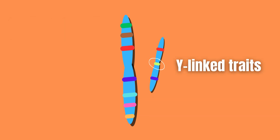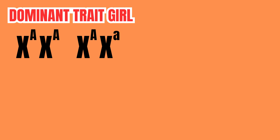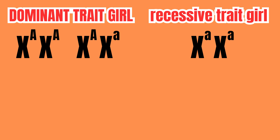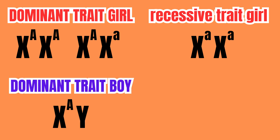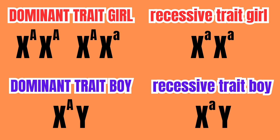However, there are also a few traits that only exist on the Y chromosome, and these are referred to as Y-linked traits. Otherwise, the traits work in the same manner as with autosomal chromosomes, meaning that they can be dominant or recessive, and one dominant allele is enough to overpower a recessive allele and express a dominant trait.